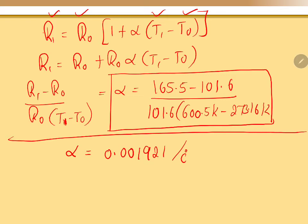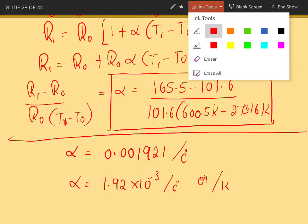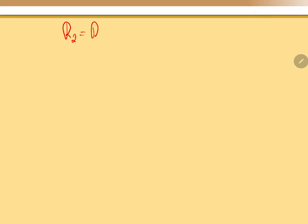Rearranging, alpha equals 1.92 × 10⁻³ per degree Celsius or per Kelvin. This is the alpha value. Now that alpha is found, we can compare R₂ and R₀ to find T₂.